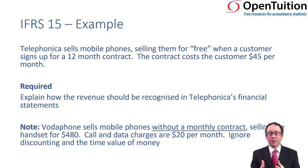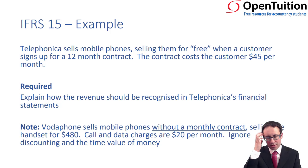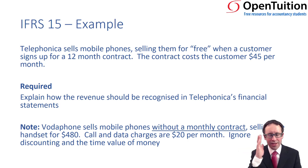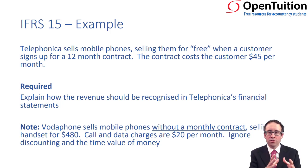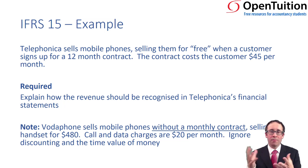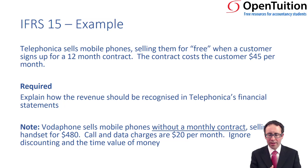What we need to do is separate it out. There is a contract, there are two performance obligations — the phone and the data and minutes — and the transaction price is a 12-month contract at $45 per month, so $540. We then need to allocate that $540 across the goods and the services using standalone prices. We'll use Vodafone, where they sell the phone separately for $480, and the data and calls at $20 per month. We'll ignore discounting and the time value of money.